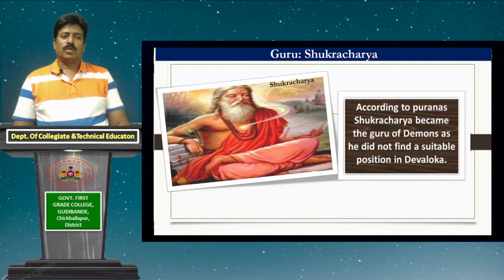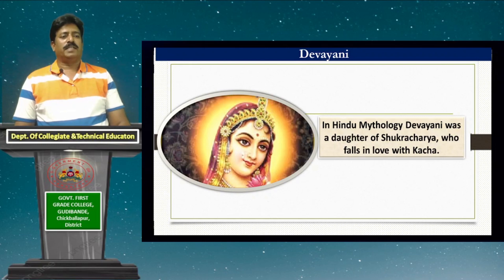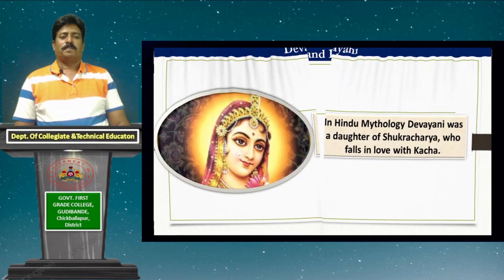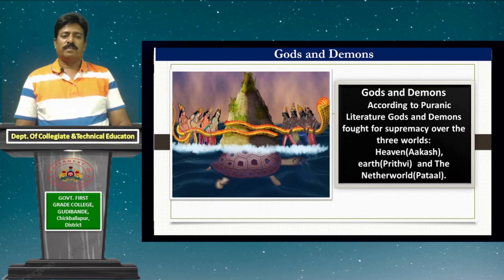According to the Puranas, Shukracharya became the guru of demons, as he did not find a suitable position in Devaloka and thus supported the Asuras. The character Devayani — in Hindu mythology, she was the daughter of Shukracharya, who falls in love with Kacha. According to Puranic literature, gods and demons fought for supremacy over the three worlds: heaven (Akash), earth (Prithvi), and the nether world (Pathal).